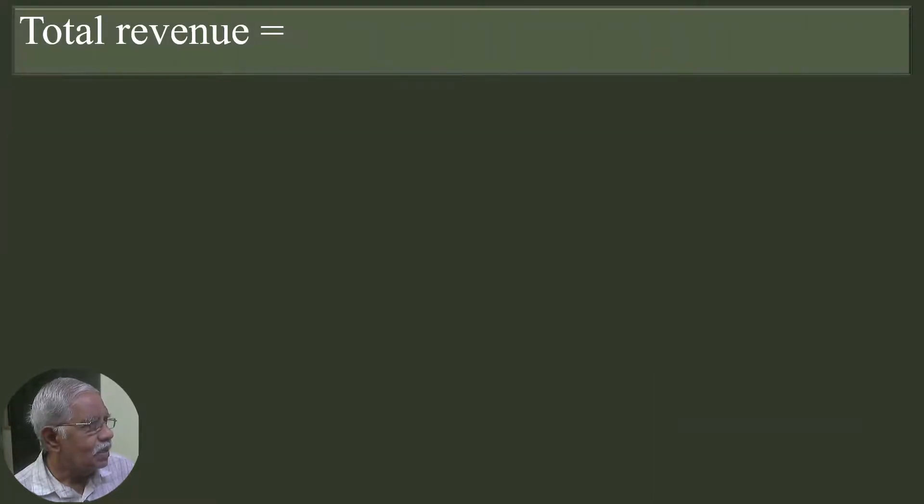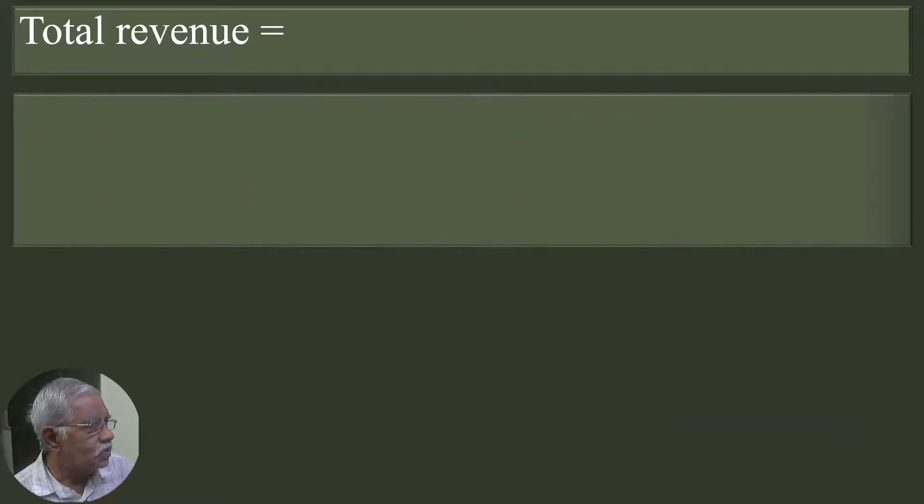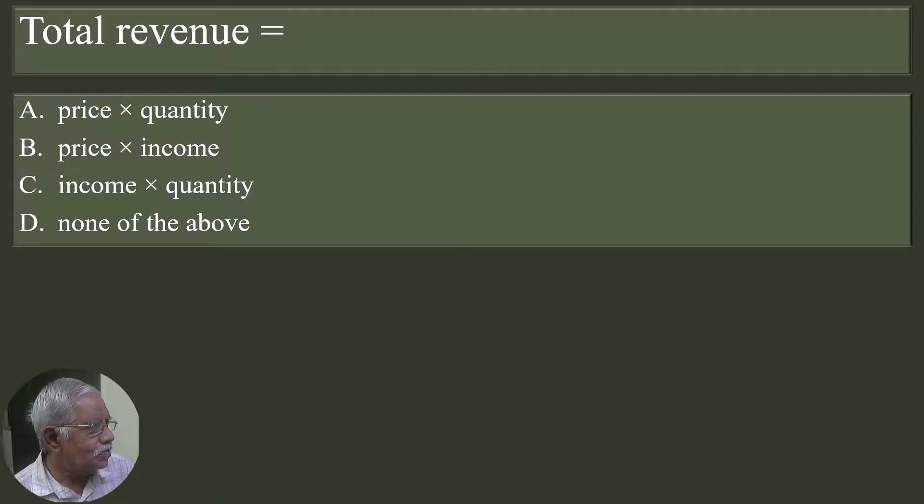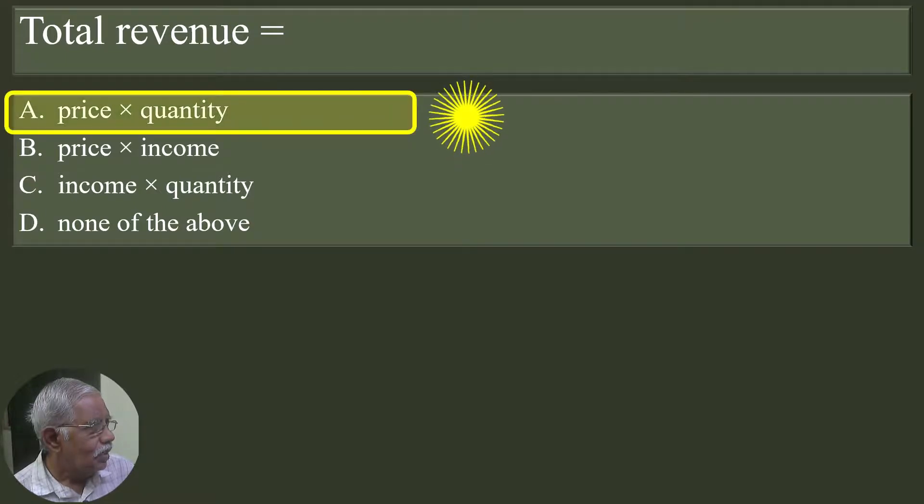Total revenue is equal to price times quantity, price times income, income times quantity, none of the above. Price times quantity is the correct answer.